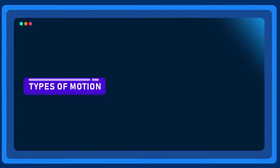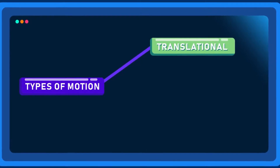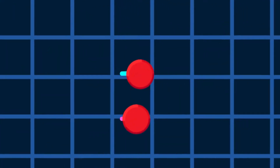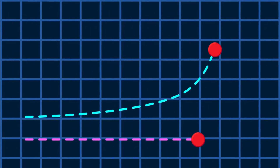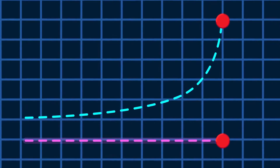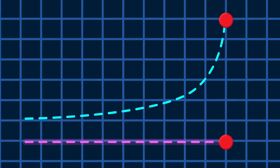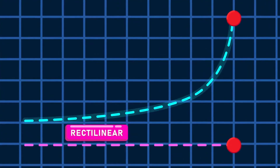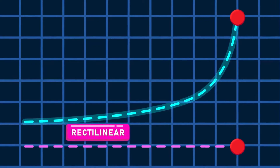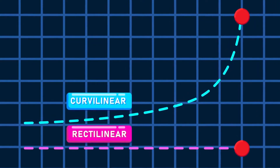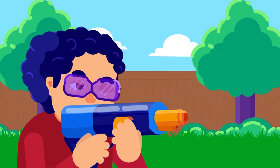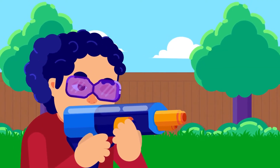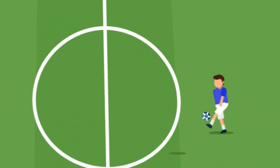Types of motion. Translational motion: the motion of a body where it moves in a linear path is called translatory motion. The movement can be in a straight line, also called rectilinear motion, or along a curved path, also called curvilinear motion. Many activities in our daily life, like a bullet fired from a gun or kicking a ball, are examples of translatory motion.